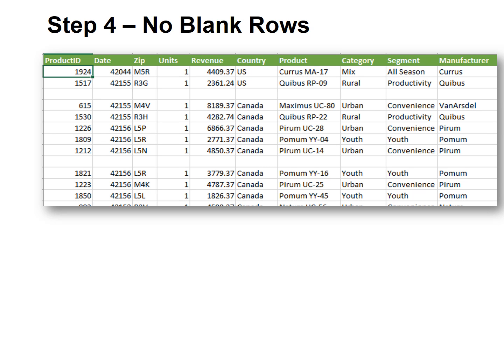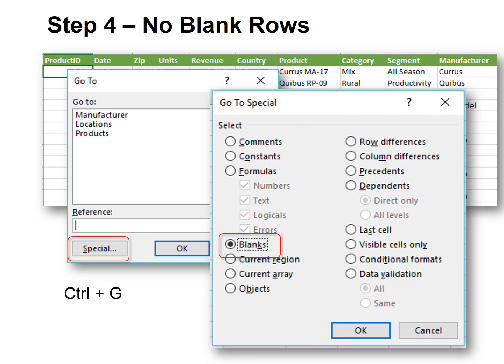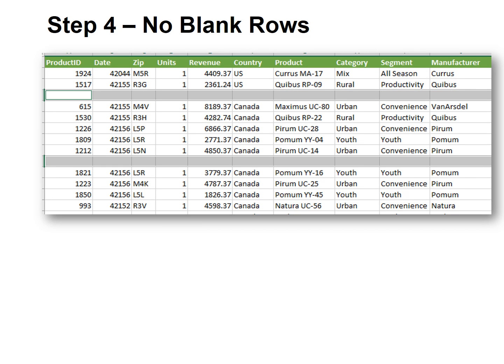Here's a quick way to delete all those blank rows. Instead of searching and hoping you find them, we'll use Go To Special. Click in your database, then click Control-G to quickly go to Go To. Then click Special. Under Special, one of your options is Blanks. When you choose Blanks, it will select all the blank rows in your database and you can hit Delete to remove them all at once.